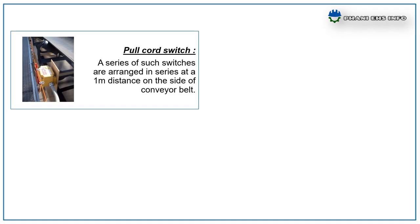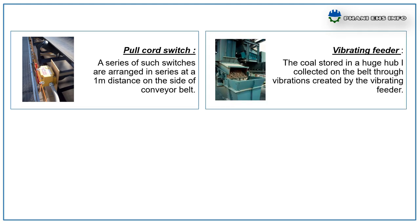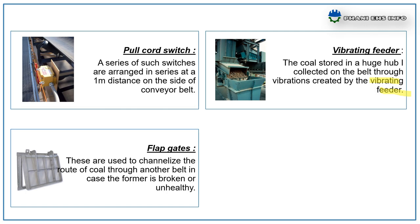Safety Controls: Full Cord Switch — a series of switches are arranged in series at a one meter distance on the side of the conveyor belt. The power supply to the rotor of the conveyor belt is established only if all switches are in series connected. Full Cord Switch is an emergency switch to stop the belt conveyor instantly when an accident happens. Vibrating Feeder — the coal stored in the hub is collected on the belt through vibrators created by the vibrating feeder. Flap Gates — these are used to channelize the route of coal through another belt in case a belt is broken or unhealthy. The flap gates open to let the coal pass and if closed stop its movement.